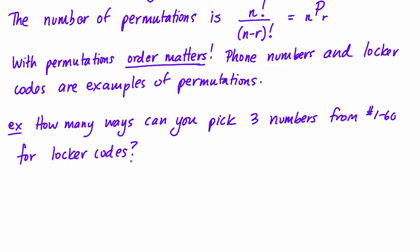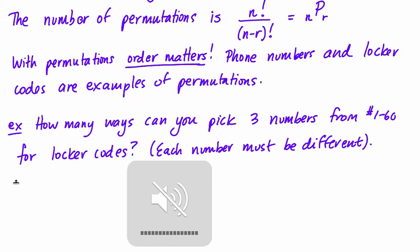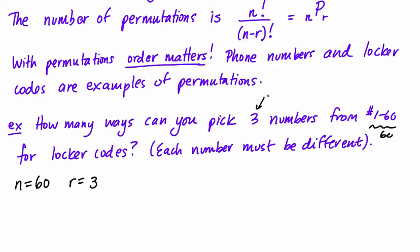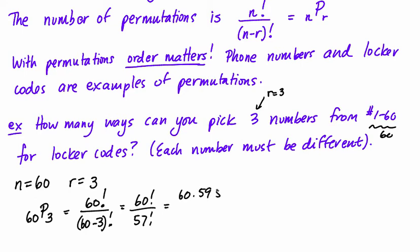The number of things we have in this case is 60, and the r value is 3. So we have 60P3, and if we use the formula, this is 60 factorial divided by 60 minus 3 factorial, which is 60 factorial over 57 factorial. By factorial notation, this is 60 times 59 times 58 times 57 and on and on.